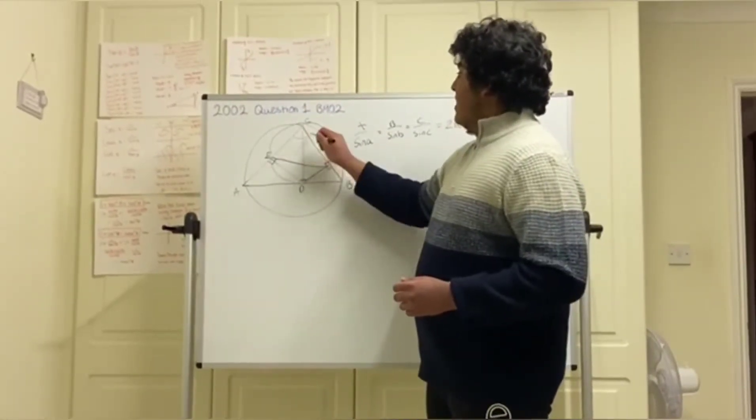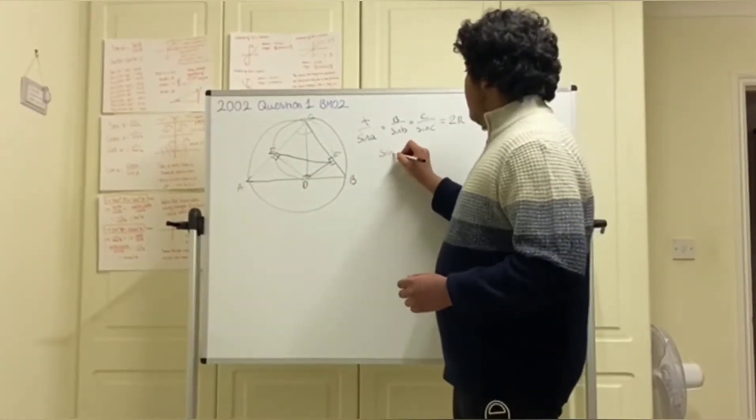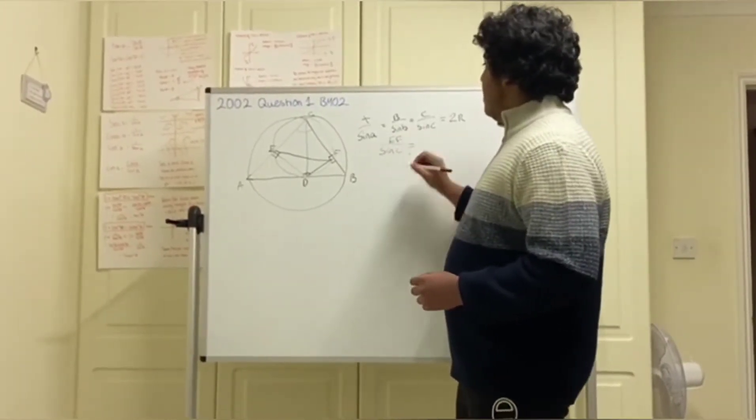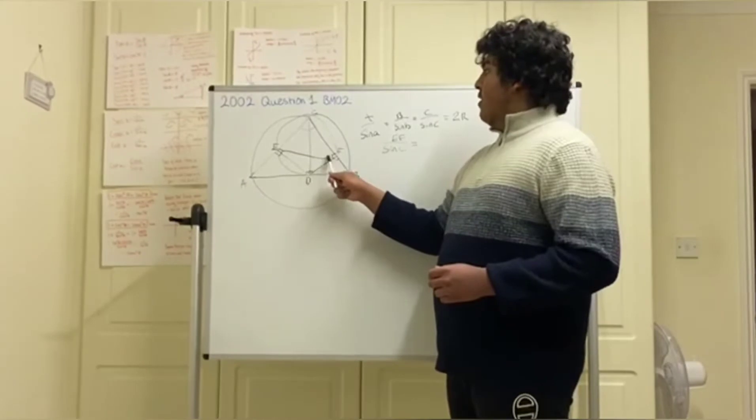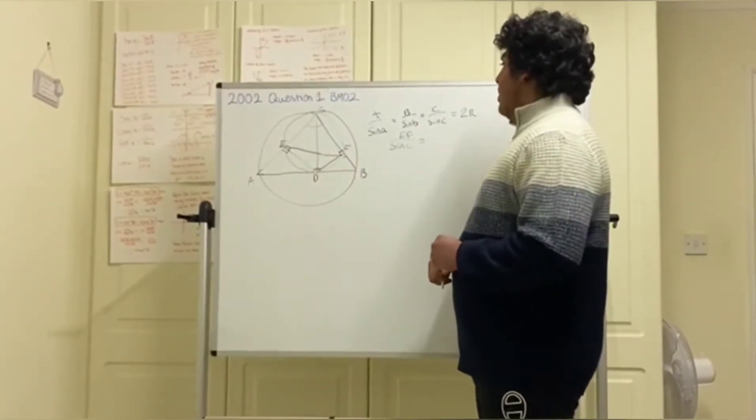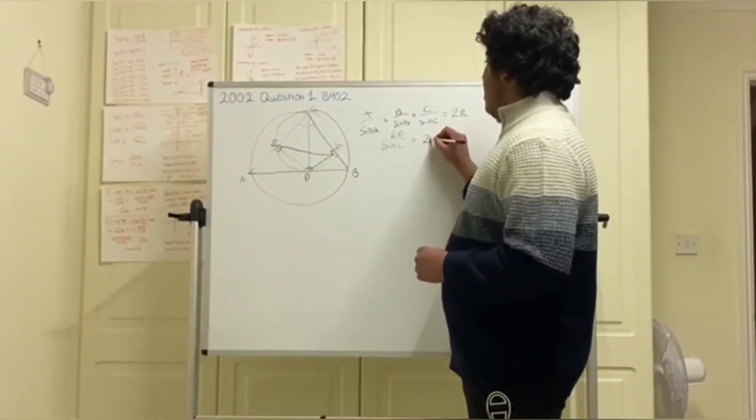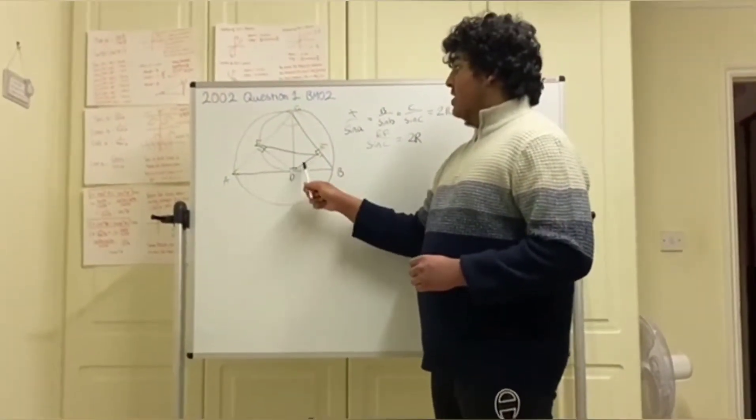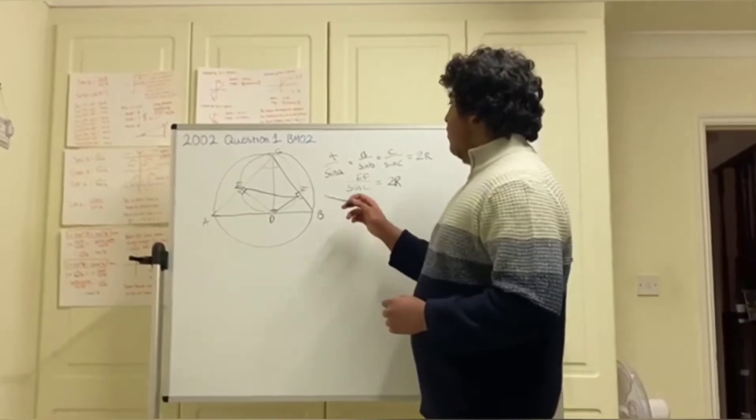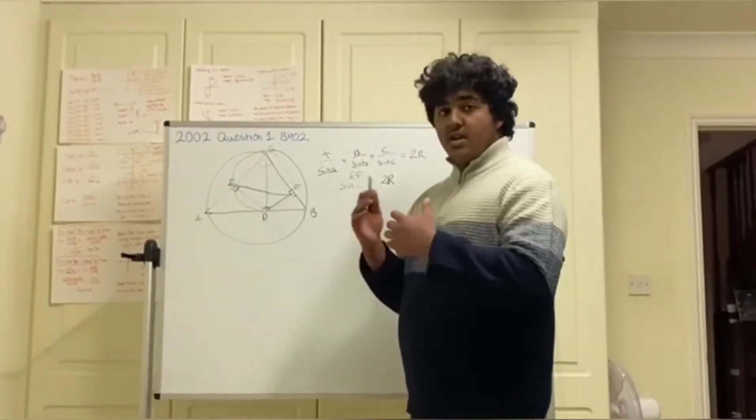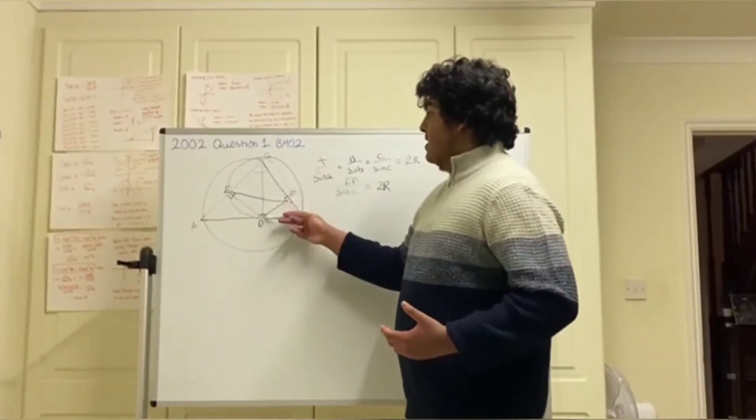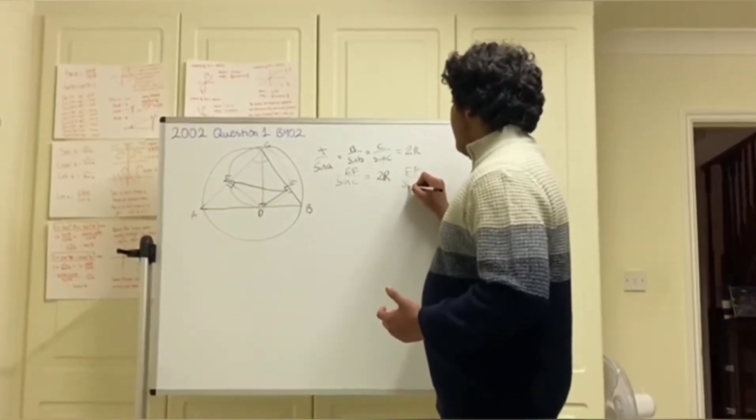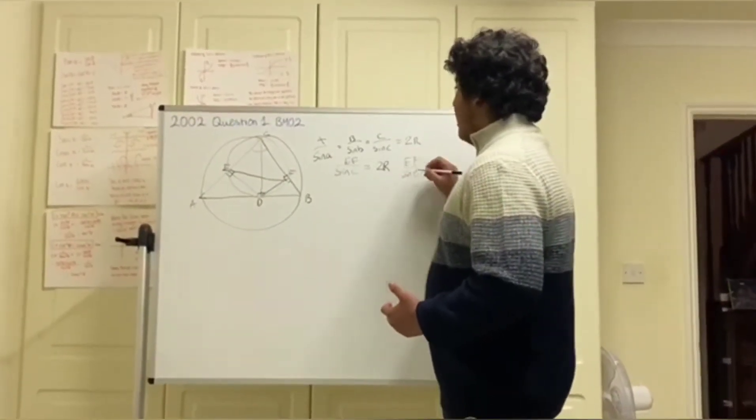Since EF over sin C, EF over sin C will equal to R, where R is the radius of the circle CDFE. Obviously, R radius times two is just the diameter. So that would be the line CD. So we can write that EF over sin angle C equals line CD.